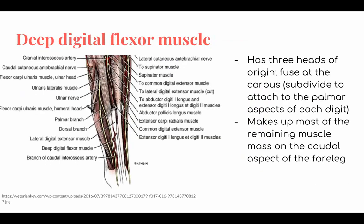Deep digital flexor muscle has three heads of origin, fused at the carpus, that subdivide to attach to the palmar aspects of each digit. It lies deep to the superficial digital flexor muscle and the flexor carpi ulnaris. It extends from the medial epicondyle of the humerus (humeral head), the caudal aspect of the proximal ulna (ulnar head), and the middle of the medial radius (radial head), towards the palmar aspect of the distal phalanges of each digit. The function is to flex the carpus and digits.